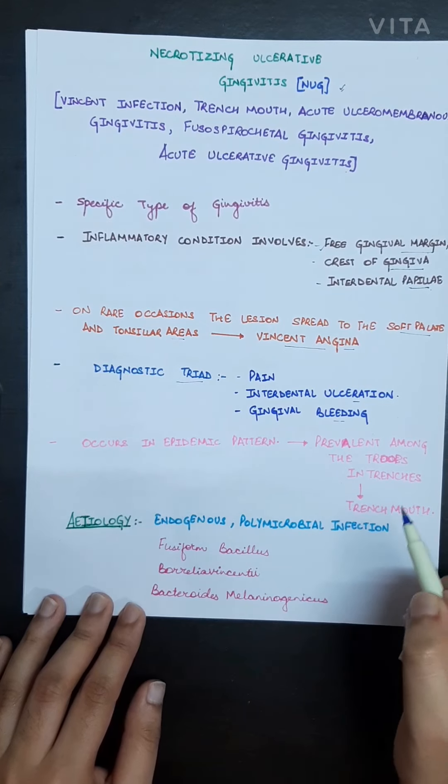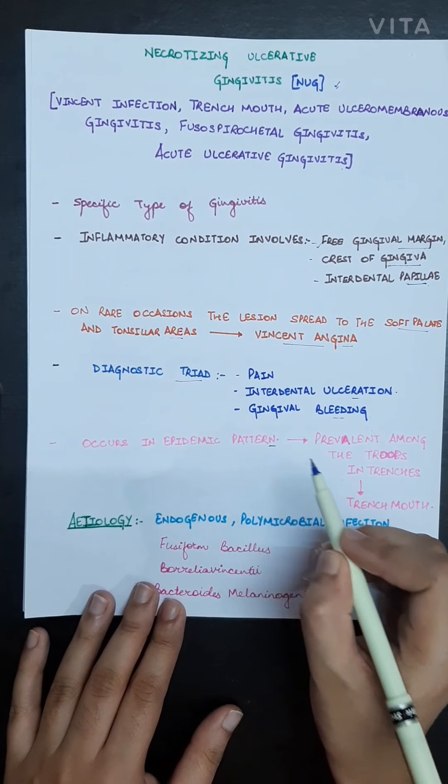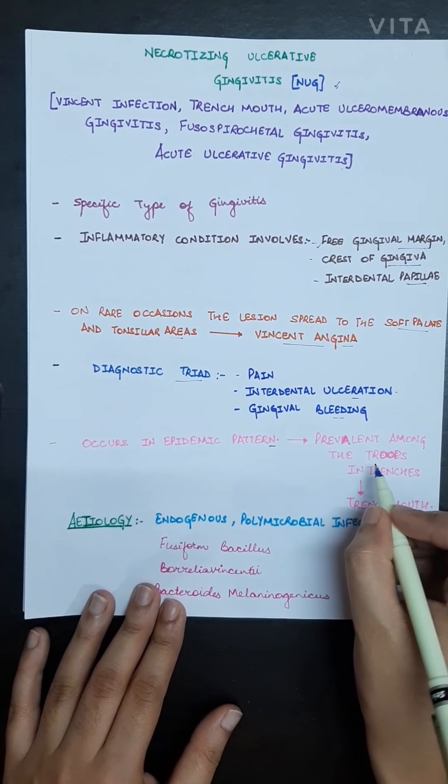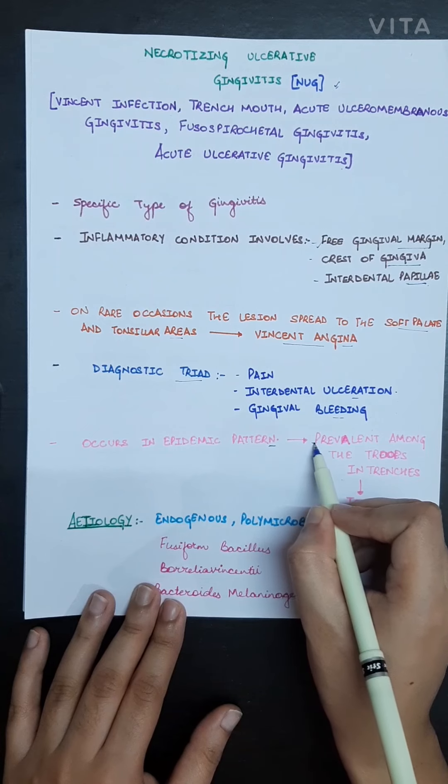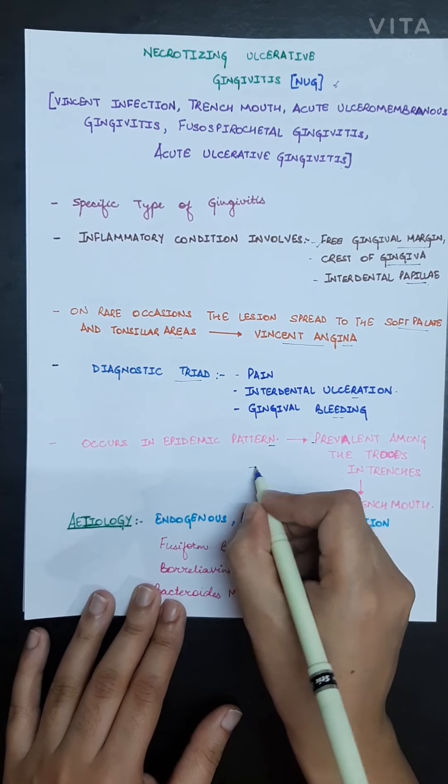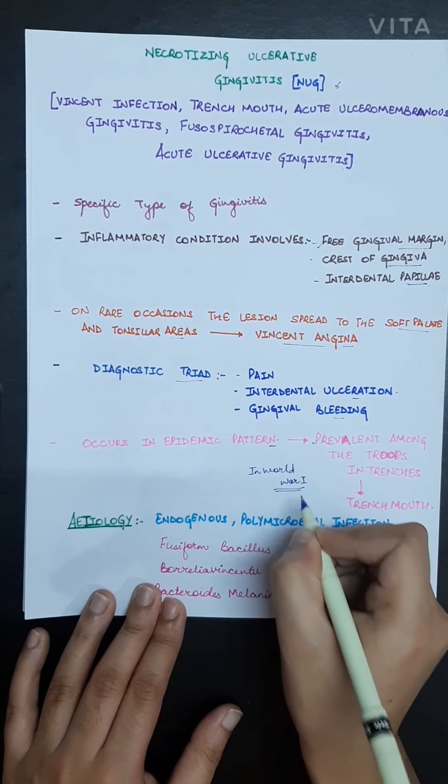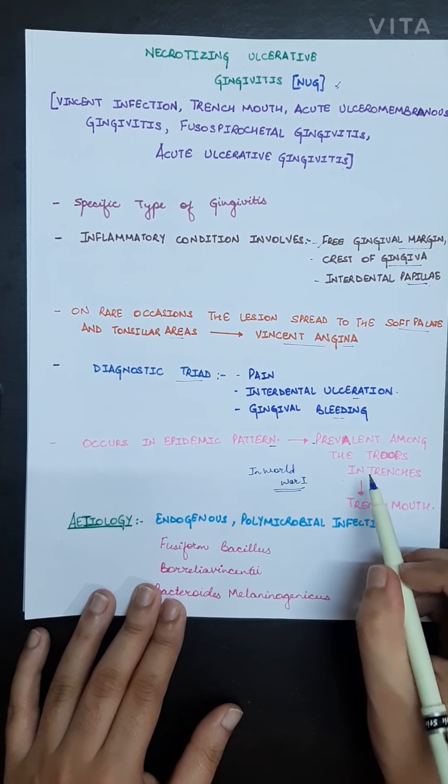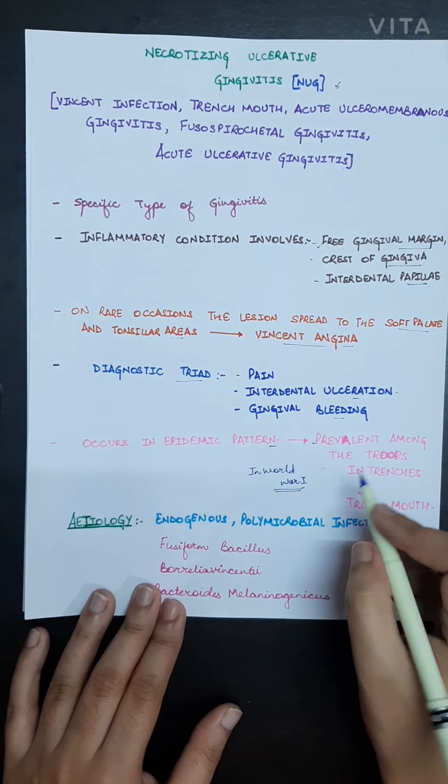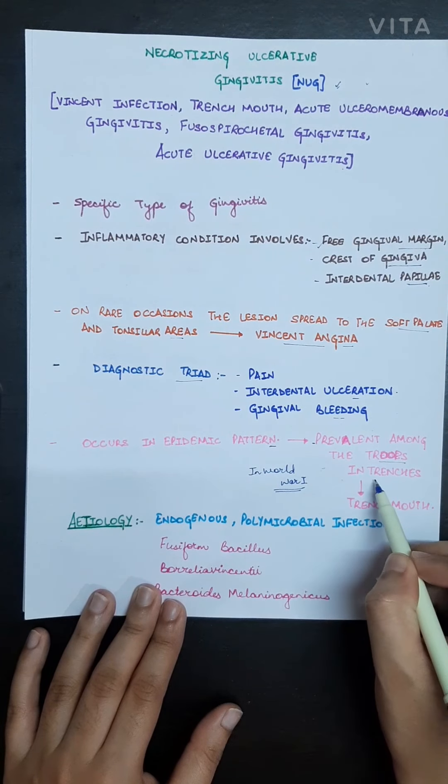It occurs in epidemic pattern, so basically the people who are living under similar conditions will be prevalent for this disease. In World War One, all the allied troops or soldiers who were living under similar conditions were prevalent for getting this disease. It was prevalent among the troops in trenches, that's why the disease is also known as trench mouth.